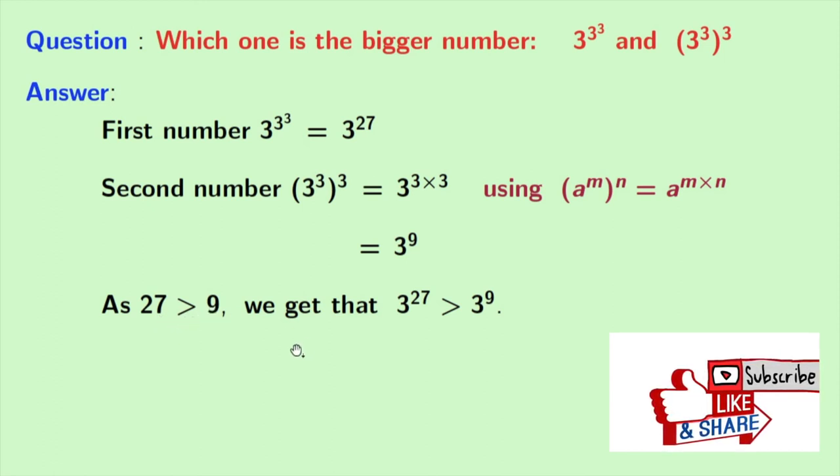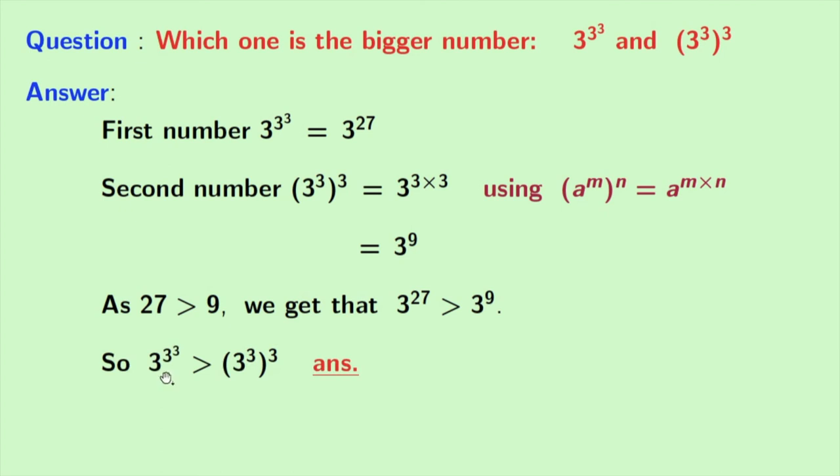So, we get that 3^27 is greater than 3^9. So, we have found that the first number is bigger than the second number.